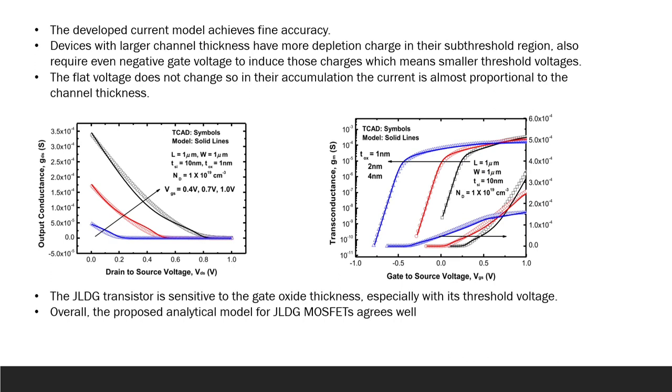This figure shows model predicted drain current versus gate voltage with different channel thickness. Compared with simulation results, we limit the minimum film thickness to 8 nm to avoid complications due to quantum effects. The developed current model achieves fine accuracy. Devices with larger channel thickness have more depletion charge in their subthreshold region and require even negative gate voltage to induce those charges, which means smaller threshold voltages. The flat voltage does not change so their accumulation current is almost proportional to the channel thickness.